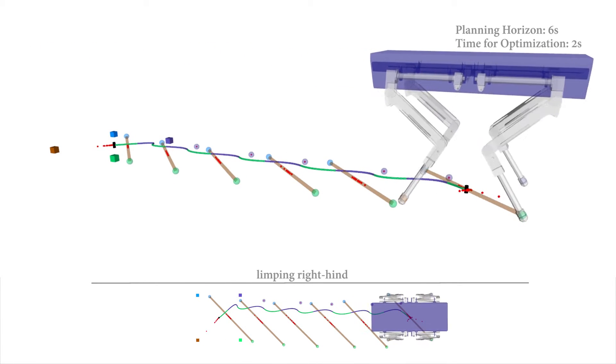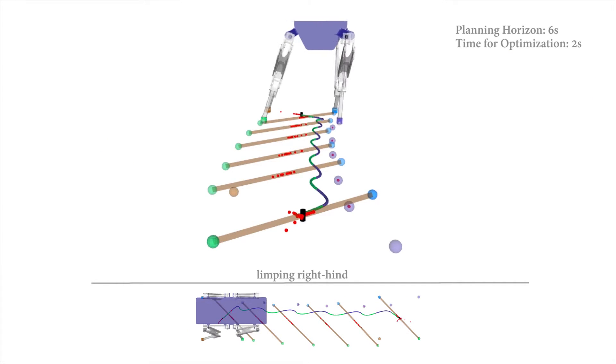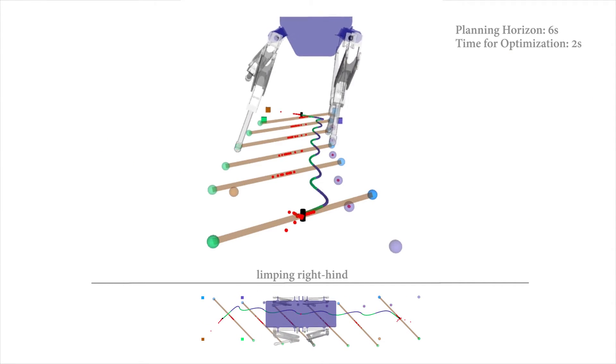This limping motion shows the center of mass automatically shifted towards the single contact to better balance the weight of the robot.